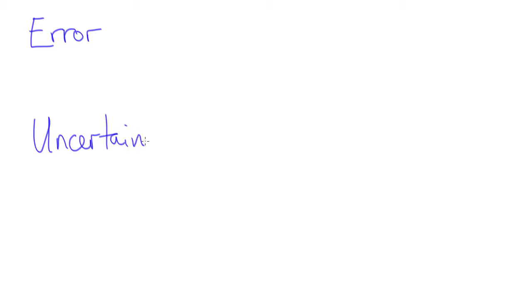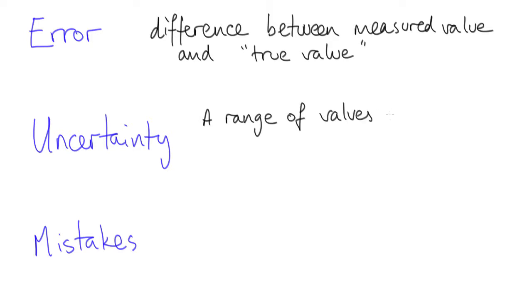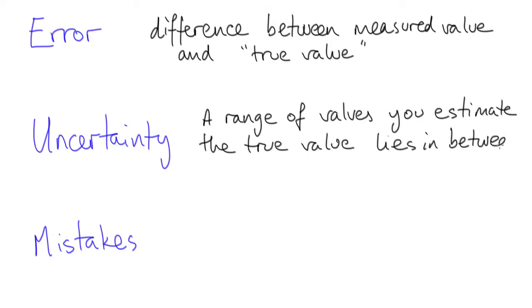As scientists we not only need to quantify what we're measuring, we also need to quantify the error or uncertainty in that measurement. Error is the difference between what you measure and the true value of the quantity. The uncertainty in a measurement is your best estimate of the range of values you think the true value will lie within.